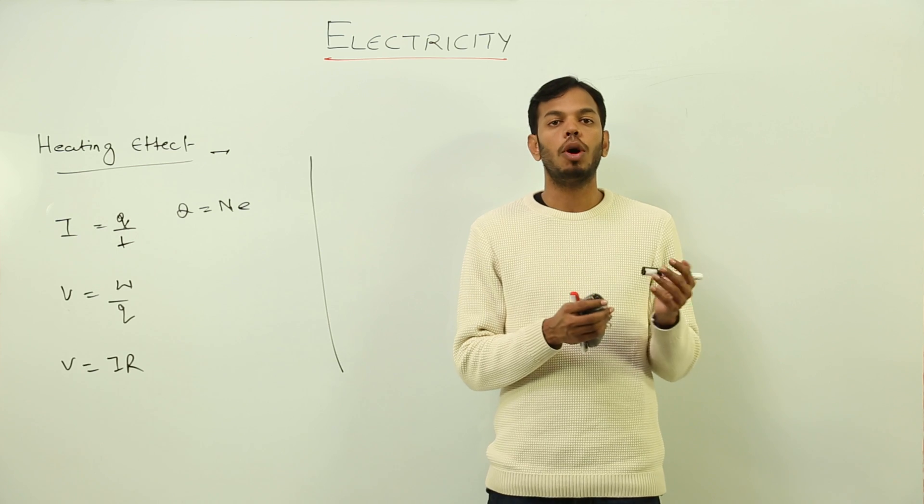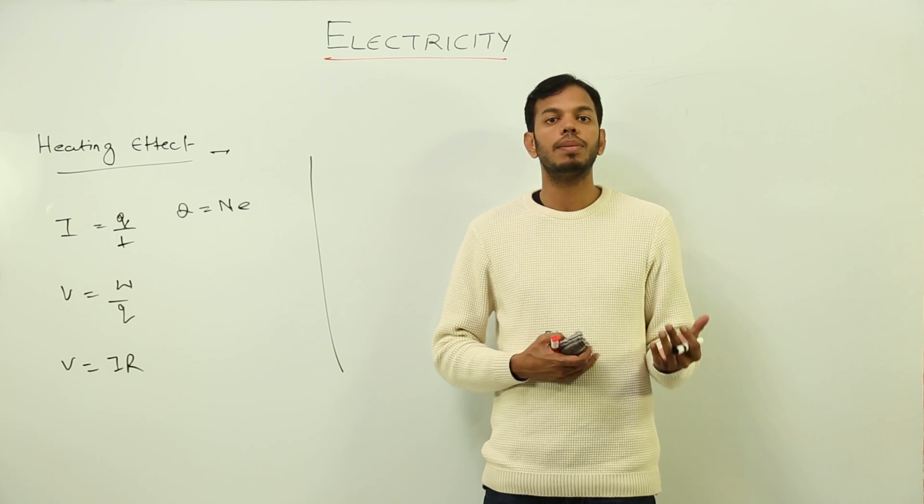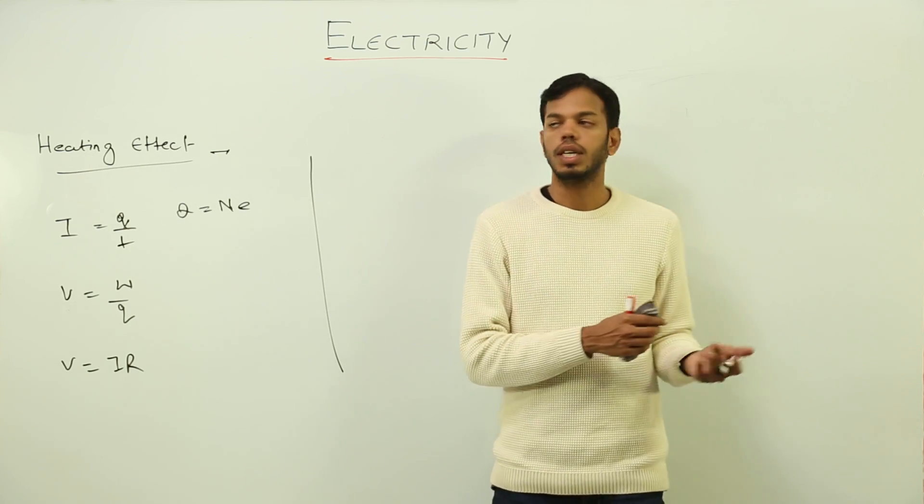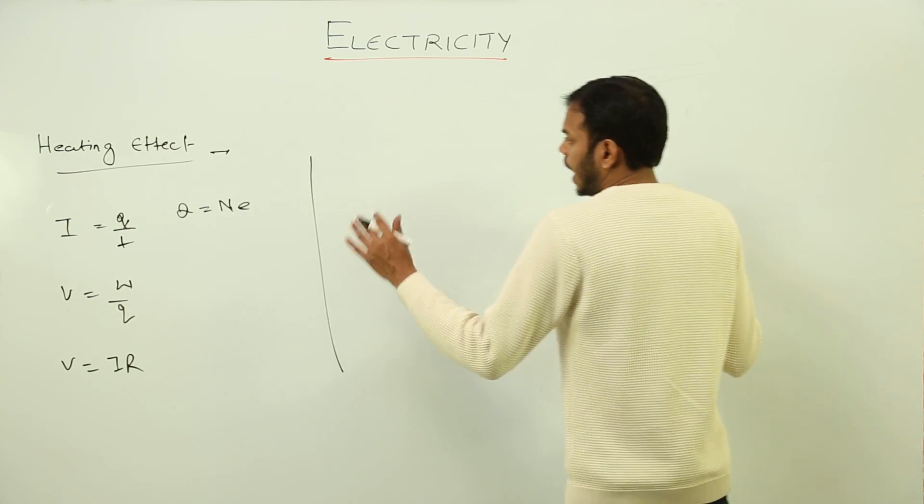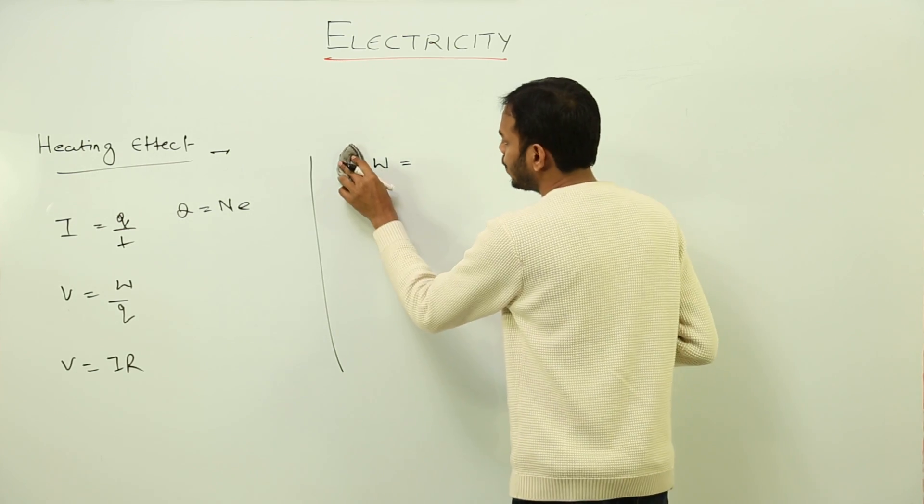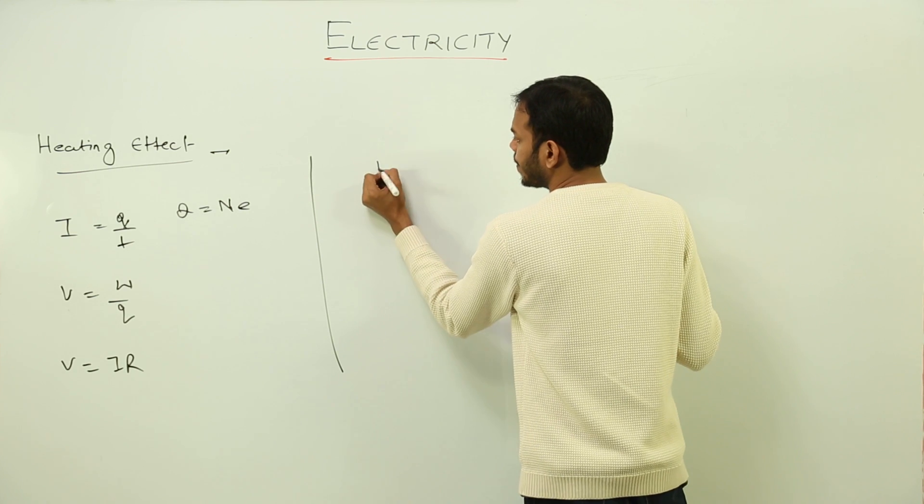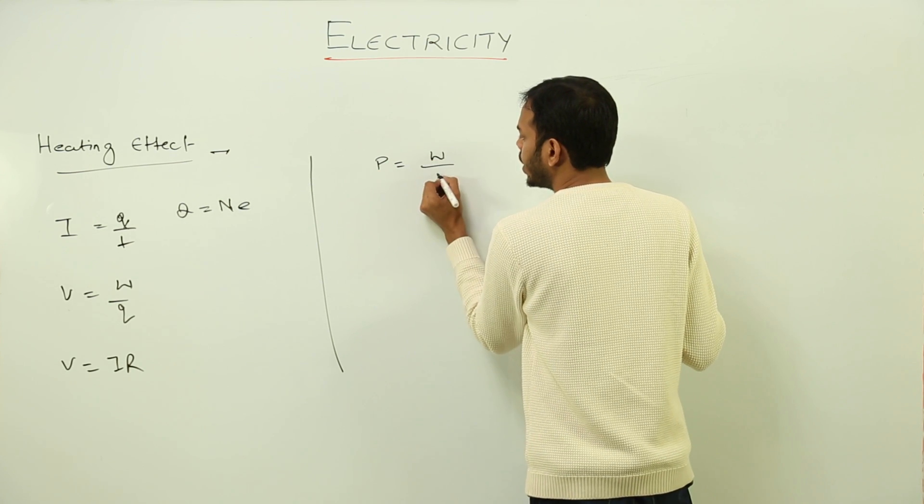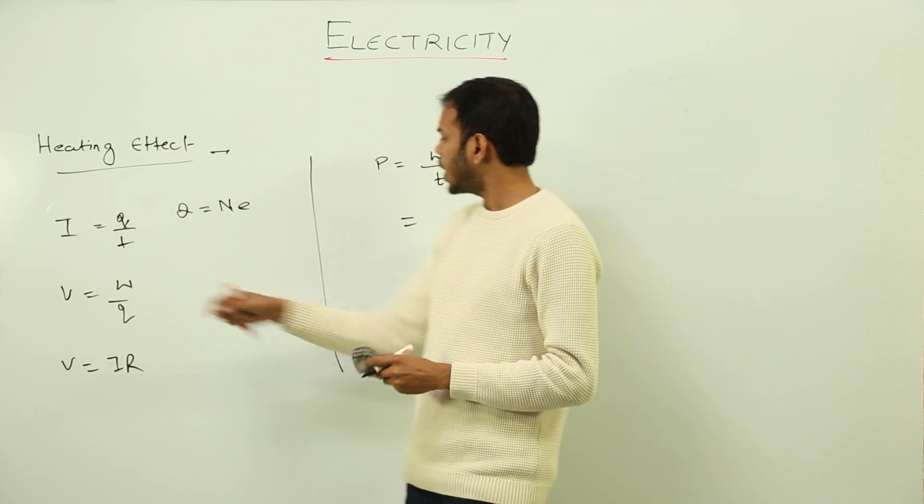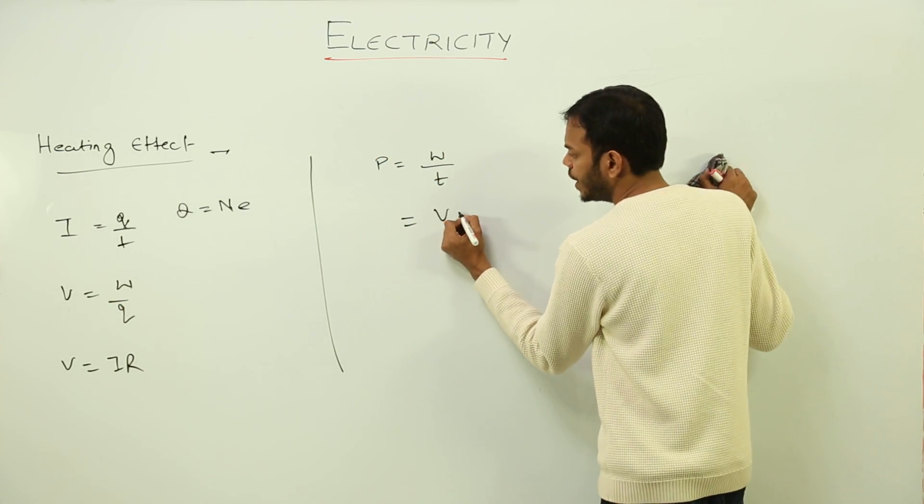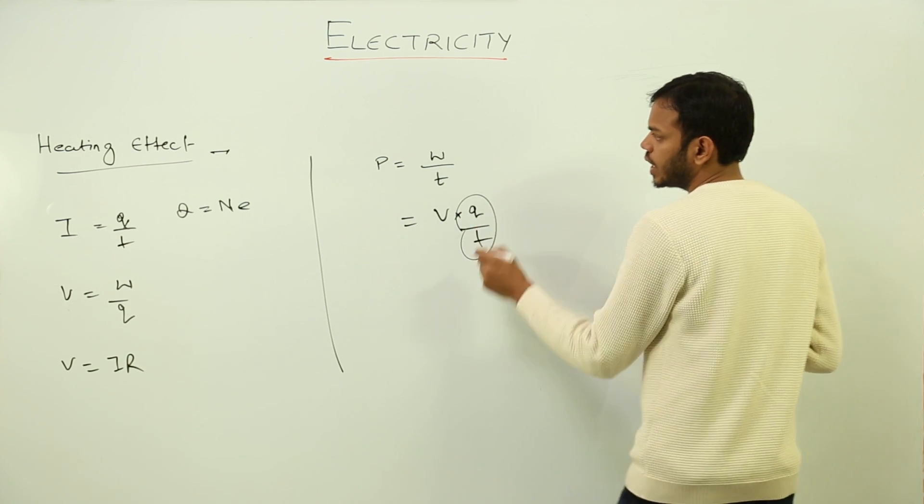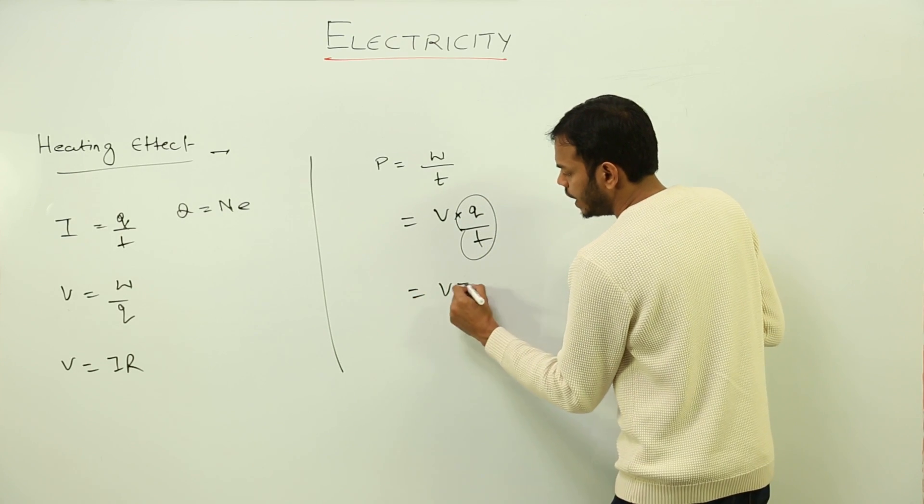And then we know voltage is current into resistance. Now the energy, as it is always associated with work done, work is equal to energy. So whatever energy stored in a body, it will be equal to the amount of work that can be done by the body. Right, so I want to know the value of work done. I can do it in terms of power. Power is rate of doing work, work upon time.